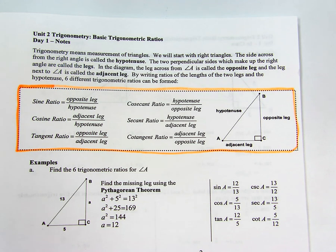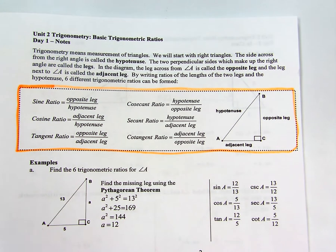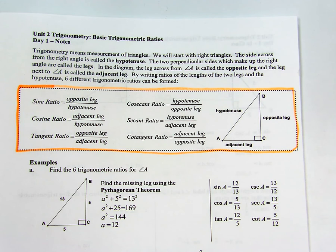Hey guys, today is Unit 2, Day 1 notes. So you guys have your entire trig packet here. We're going to start out on the notes page on page 7. This box highlighted in orange is going to be our reference for the whole unit. I'm going to quickly talk through these because you guys already have them in your booklet, and we'll label a couple of pieces and then move on to some practice problems.